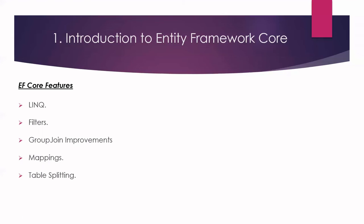With table splitting, the primary key columns are shared and each row corresponds to two or more entities. We will cover this concept in upcoming videos. Next is DbContext pooling — a performance feature that allows Entity Framework Core at runtime to use a pool of pre-created DbContext instances rather than creating a new instance every time.